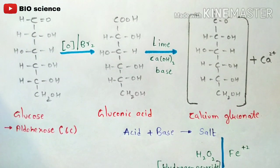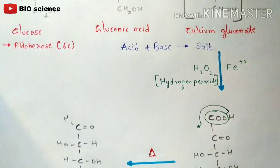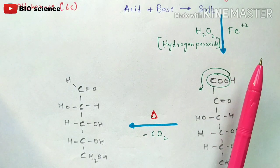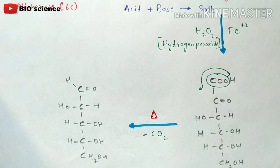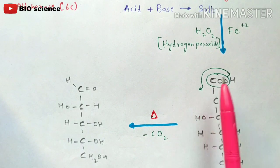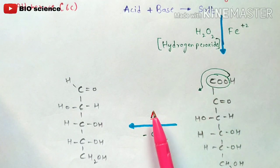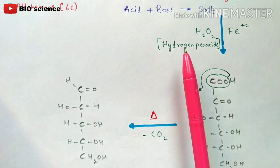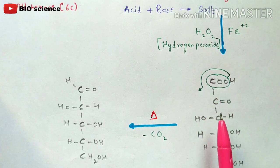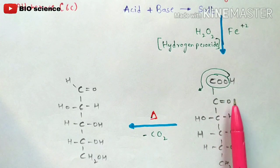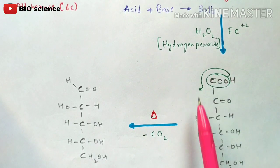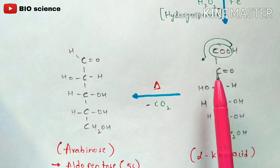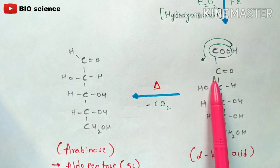This calcium gluconate is then treated with hydrogen peroxide (H₂O₂), and we also use Fe²⁺, which acts as a catalyst to speed up the reaction. The COOH group undergoes oxidation and a keto group forms at the second carbon — a C=O double bond — making this an alpha keto acid. So treating calcium gluconate with H₂O₂ in the presence of Fe²⁺ forms alpha keto acid, with the keto group at the second carbon.